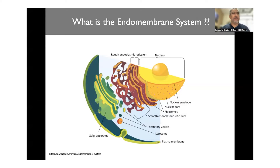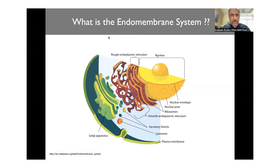We'll start today's lecture with a small recap of what we were discussing last time, and then we'll delve into two of the major players of the endomembrane system. Today we're going to look at the endoplasmic reticulum and the Golgi, and see how they are assembled and what we know about them.